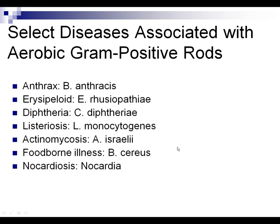Make sure you can link each organism with the disease it causes: Bacillus anthracis causes anthrax; Erysipelothrix rhusiopathiae causes erysipeloid; Corynebacterium diphtheriae causes diphtheria; Listeria monocytogenes causes listeriosis; Actinomyces israelii causes actinomycosis; Bacillus cereus causes foodborne illness; and Nocardia causes nocardiosis.